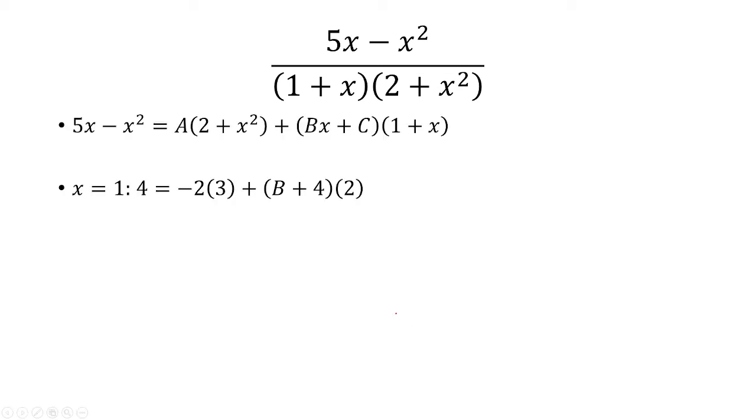Now we need to solve for B. So plug in another number, say x equals 1. On the left, we have 4. Recall A was negative 2. And then when x is 1, we have 2 plus 1 squared is 3. Here C is 4, so we have B plus 4. And then x is 1, so we have 2. Simplifying this, we have 4 is equal to negative 6 plus 2B plus 8. Negative 6 plus 8 is 2. Subtract that from both sides. We have 2 is equal to 2B, which means B is 1.